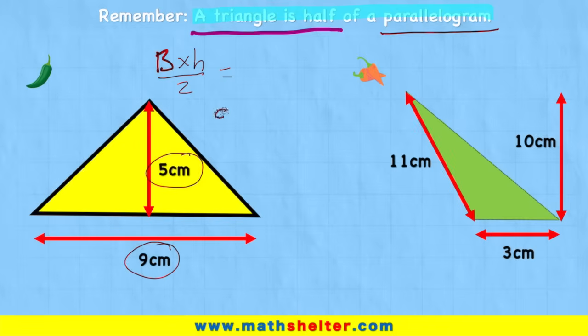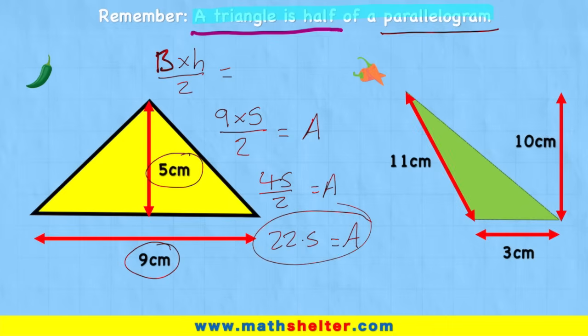So I would have 9 times 5 over 2 equals my area. Now let's do 9 times 5 first. 9 times 5 is 45. So we'd have 45 over 2 equals area. Or 45 divided by 2 is 22.5. So my area equals 22.5 centimeters squared.